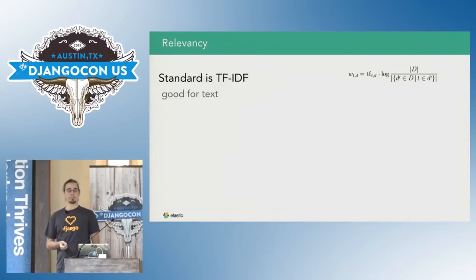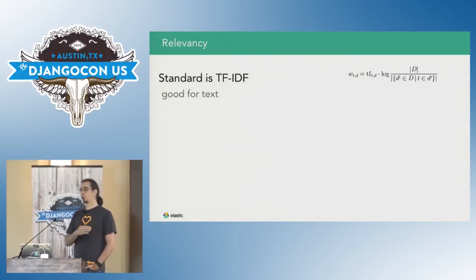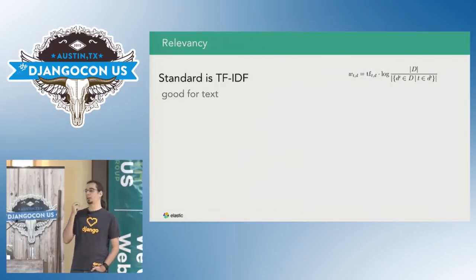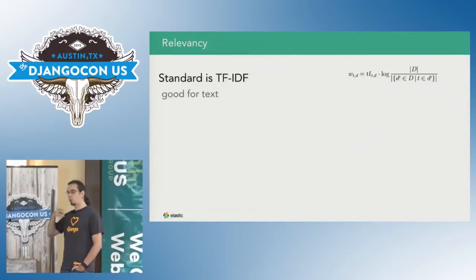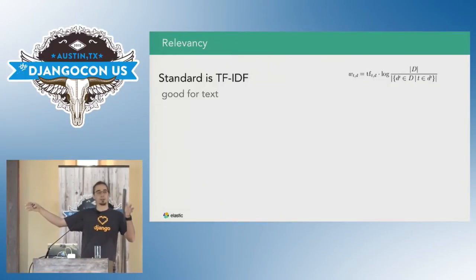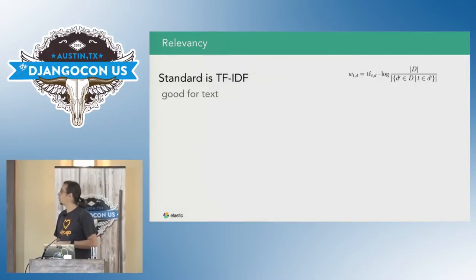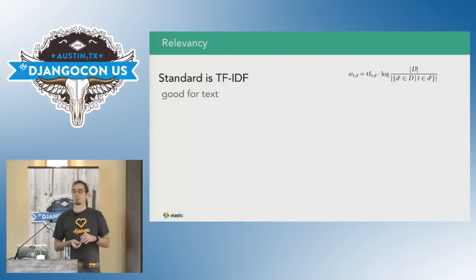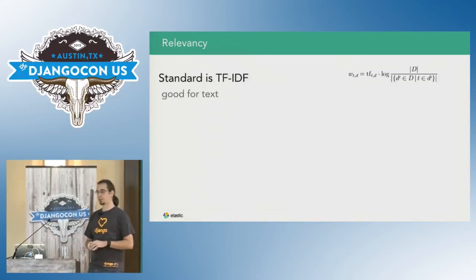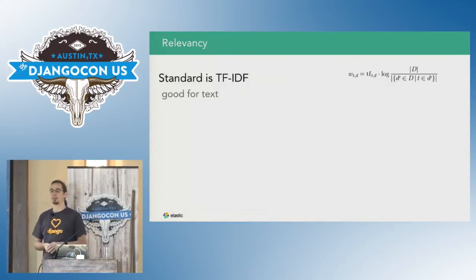IDF is inverse document frequency — a fancy way of saying how common or rare a word is in your entire dataset. Is it contained in every single document, or only in 1% of them? We can get this information right away from the inverted index — it's essentially the length of the list attached to the field compared to the total number of documents. This number has the opposite effect: the more common the word, the less relevant the document is for that result. If a word is in every single document, it doesn't tell us anything useful.